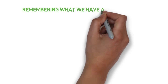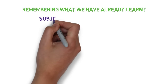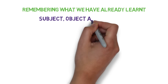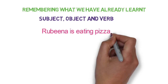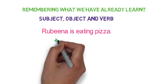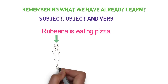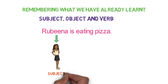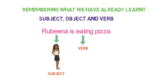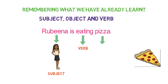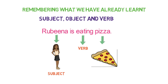Let's first quickly remember what we have already learnt about subject, object, and verbs. Let's understand it with an example: Rubina is eating a pizza. Here, who is the doer of the action? Rubina. So Rubina is the subject here. And what is the action performed by Rubina? Eating — so it's the verb. And what she is eating, or who is at the receiver end? Pizza — so it's the object.